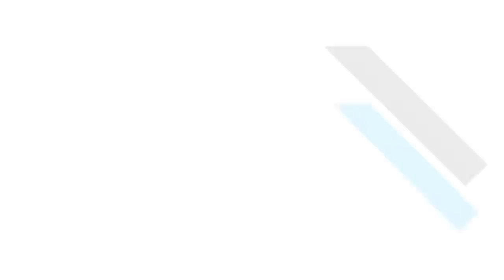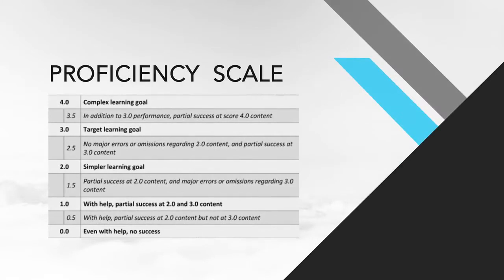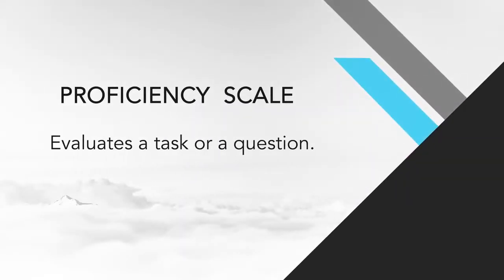So what's a proficiency scale? A proficiency scale has a 4.0, a 3.0, a 2.0, a 1.0, and a 0.0 level. But these are not like a rubric. Rubrics are used to evaluate student work — I might look at a sample of Billy's work and say, according to my criteria on my rubric, Billy's work is a 2. But that's not what a proficiency scale does. A proficiency scale evaluates a task or a question and says that task or question is a 2.0 item or a 3.0 item.